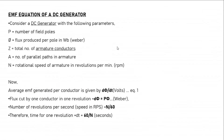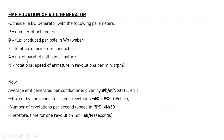Next, a very important topic is the EMF equation of the DC generator. Consider a DC generator with the following parameters: P is the number of field poles, φ is the flux produced per pole in webers, Z is the total number of armature conductors present, A is the number of parallel paths in armature, and N is the rotational speed of the armature in RPM (revolutions per minute).